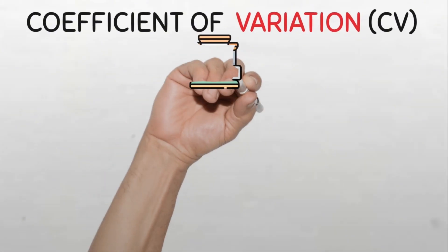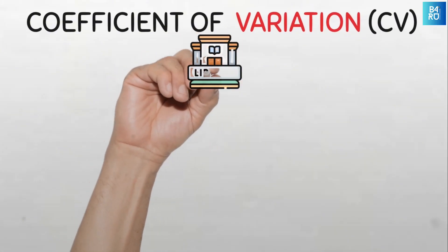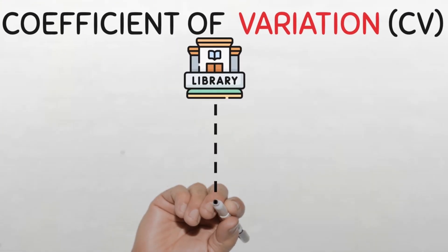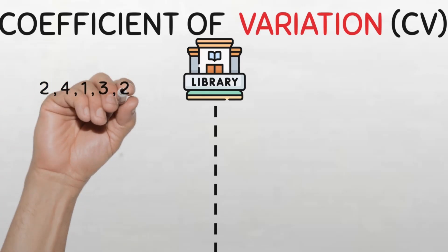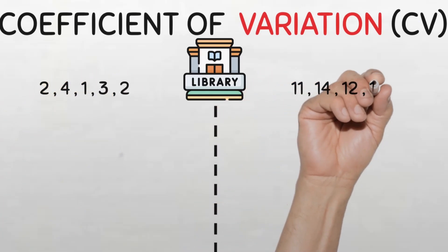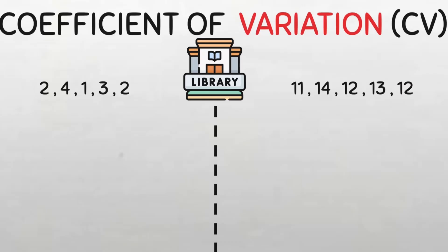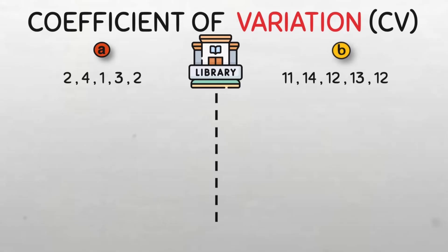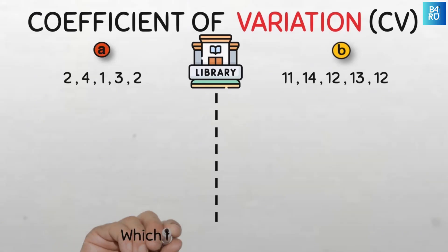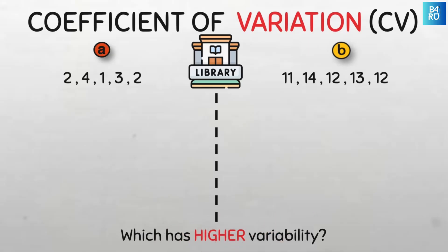Let us explore this interesting concept a little further with an example. Consider two different data sets on the number of hours students spent in the Kashim Ibrahim Library of Ahmadu Bello University in Nigeria in one week. Data set A is from a random sample of five engineering students, while data set B is from a random sample of five medical students. The question is which of the two groups has less consistency in the library? In other words, which of the data sets is more dispersed or which has a higher variability?